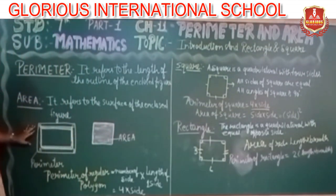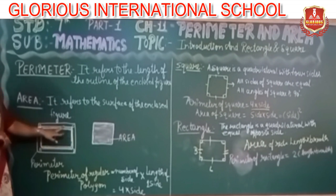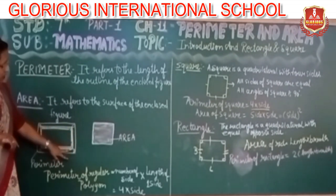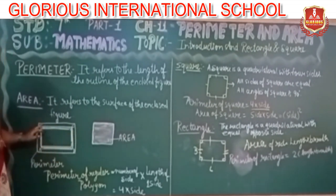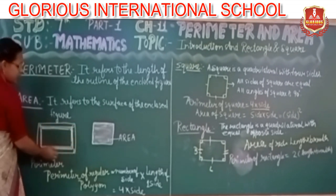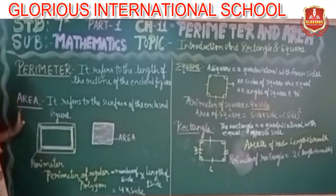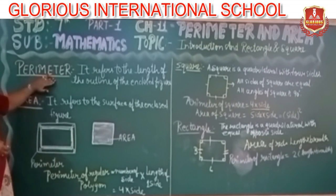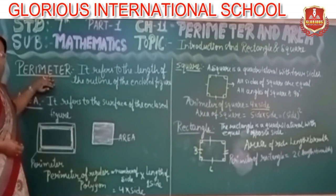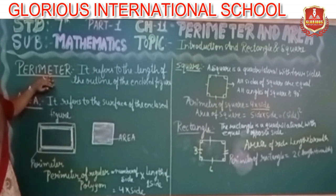If this is the figure, then the distance A to B, plus B to C, plus C to D, and D back to A — this outside line, the sum of the lengths along the boundary, is the perimeter. So simply, perimeter is the measure of the outline of a closed figure. Clear?